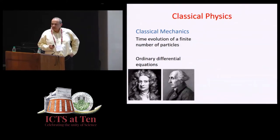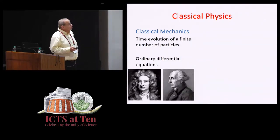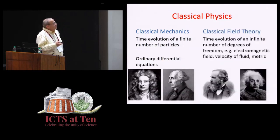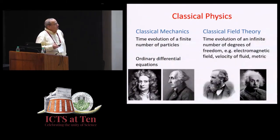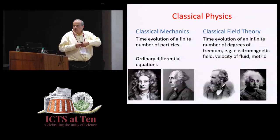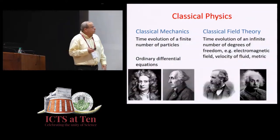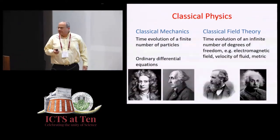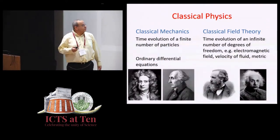The first generalization of that came about a century or two later, when instead of classical mechanics, we have classical field theory. And the difference between the left side and the right side is that we still have time evolution, but here we have an infinite number of degrees of freedom. Not just one degree of freedom, but the whole continuum of degrees of freedom.